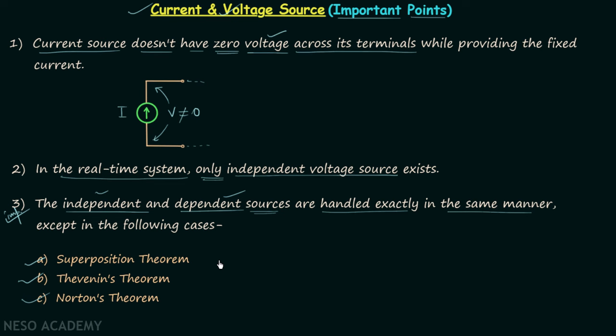So now I will explain how you have to deal with independent source and how you have to deal with dependent source while using these three theorems. In case of dependent sources, whenever you have a dependent source in the network and you are applying either of the three theorems, then you have to keep them as it is.